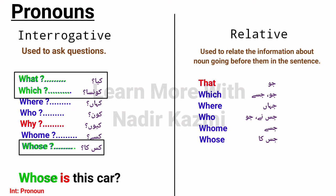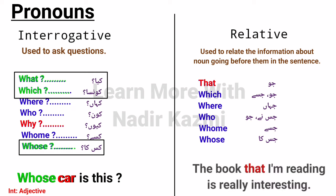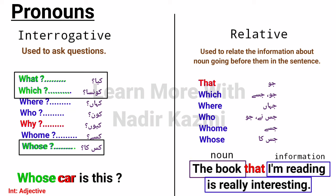Now let's use examples of relative pronouns in sentences. 'The book that I'm reading is really interesting' — jo kitaab mein parh raha hoon woh waqi dilchasp hai. Here 'book' is the noun, and 'that' is a relative pronoun because it relates information about the noun 'book' — the information 'that I'm reading' — to the noun itself, linking it together.